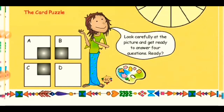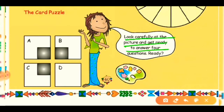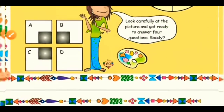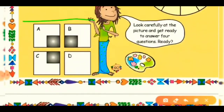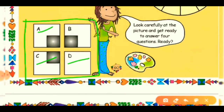Now come to the card puzzle. Look carefully at the picture and get ready to answer four questions. Here you can see that a whole square is divided into four small squares: A, B, C, and D. Square A is also divided into parts.